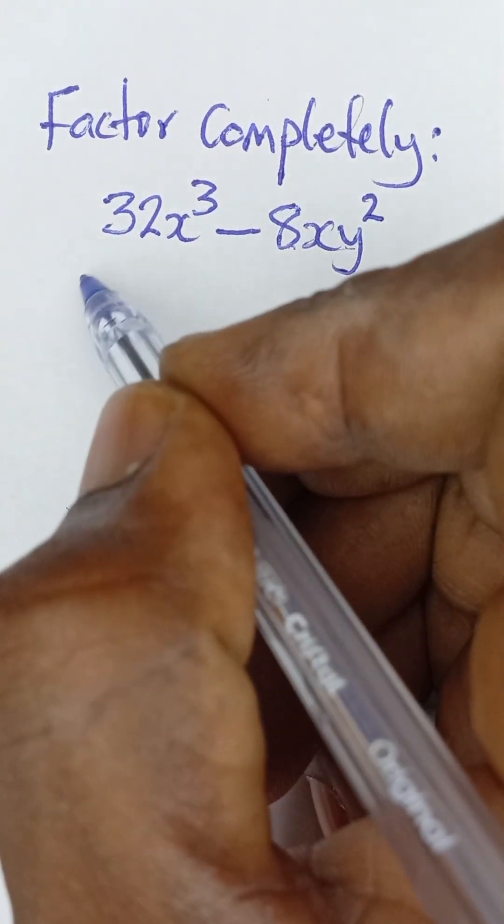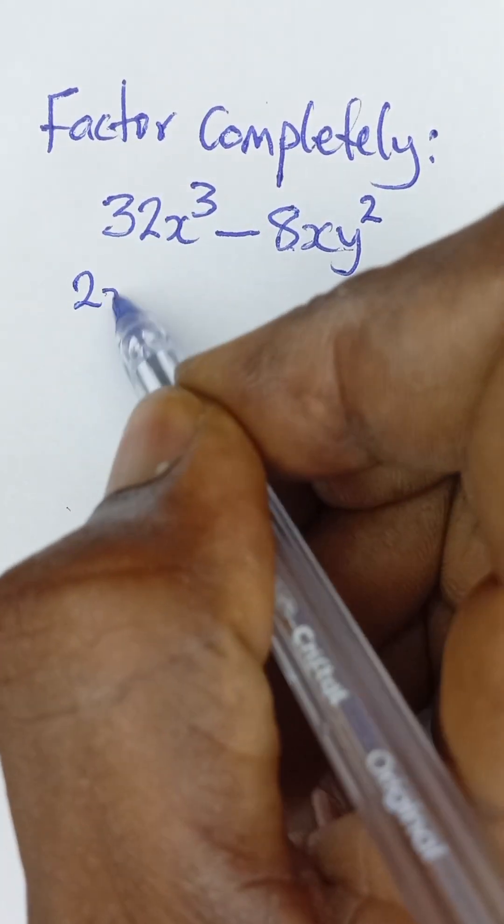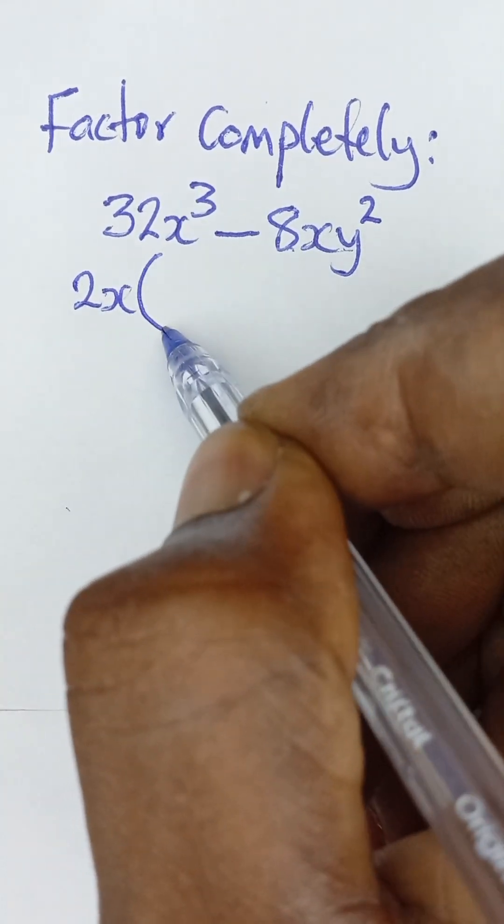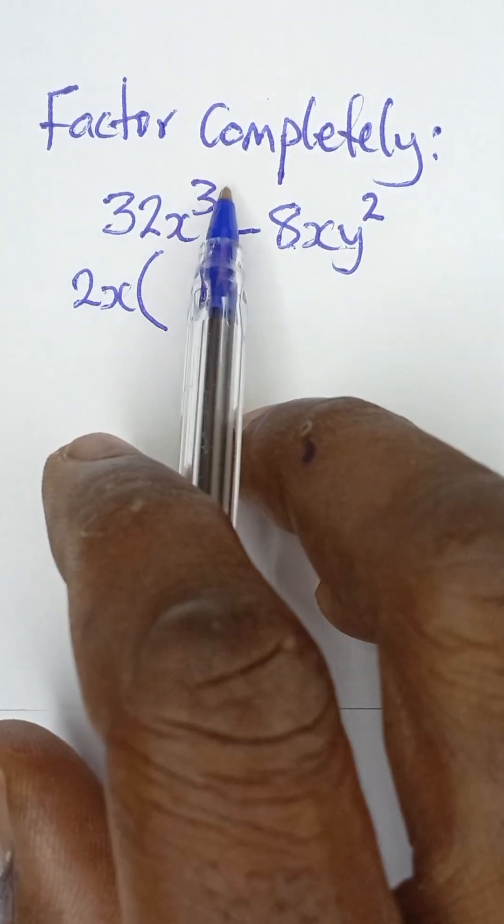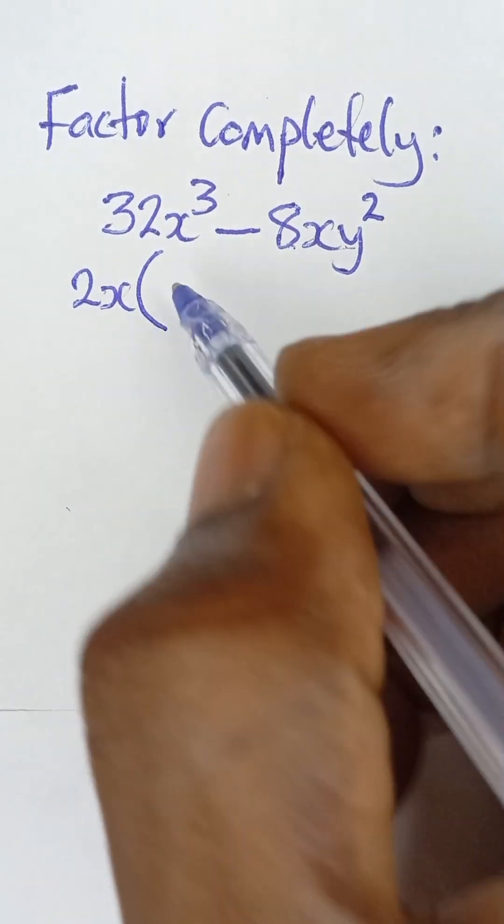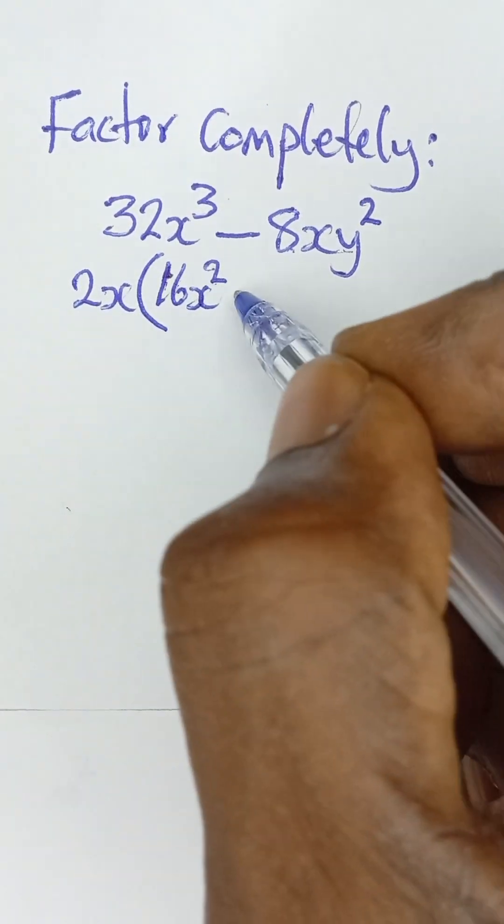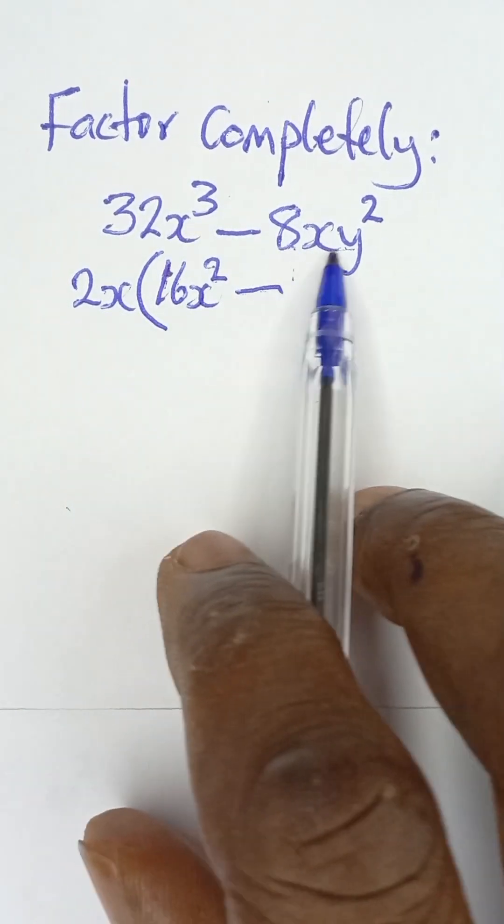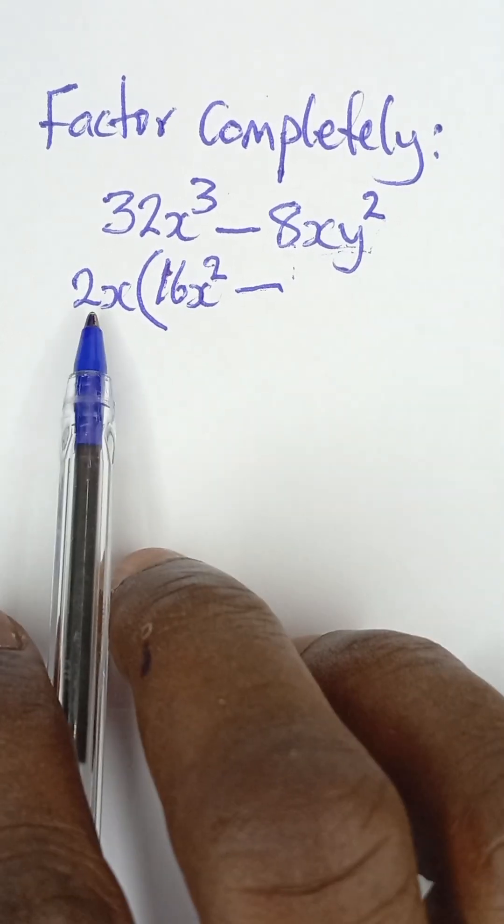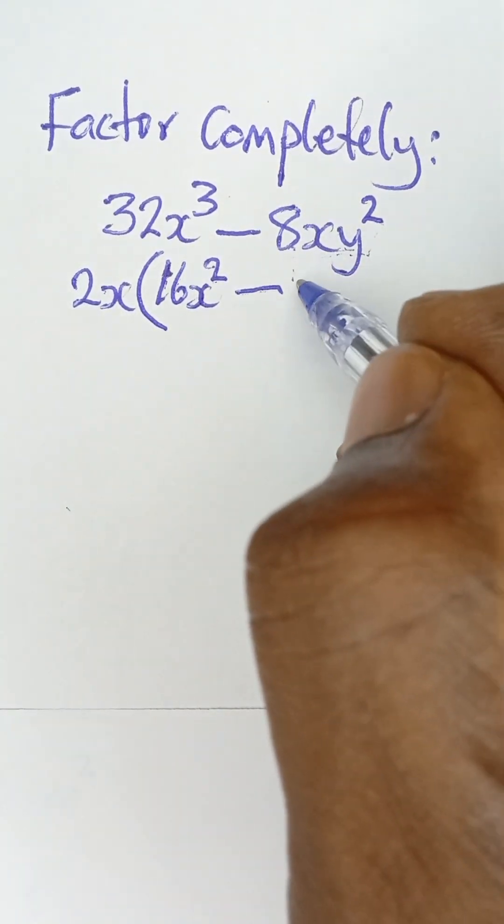So I can take out 2x, open up brackets. Then 32x³ divided by 2x is going to give me 16x², and then minus 8xy² divided by 2x is going to give me 4y².